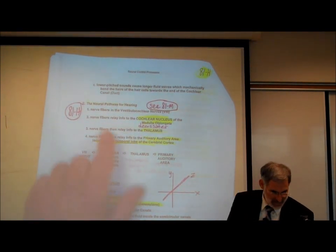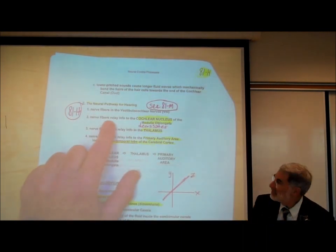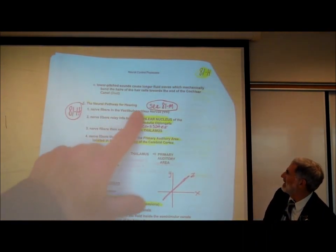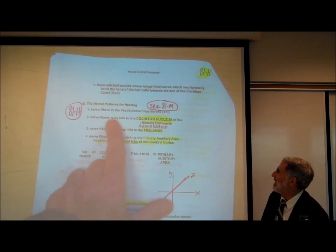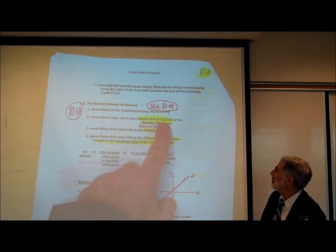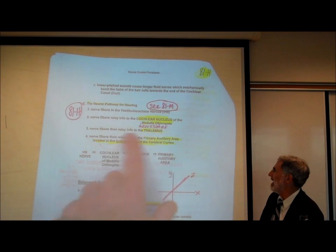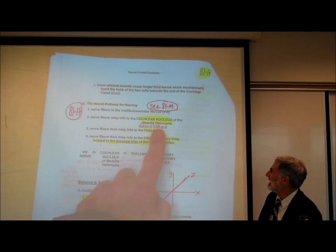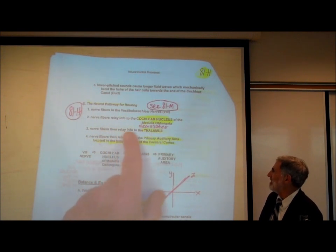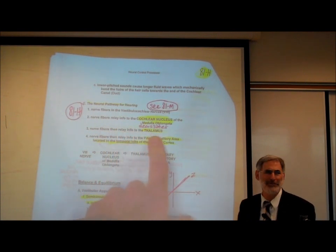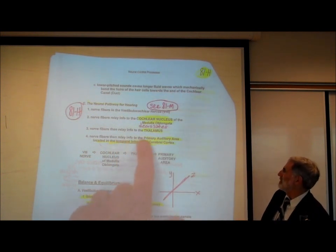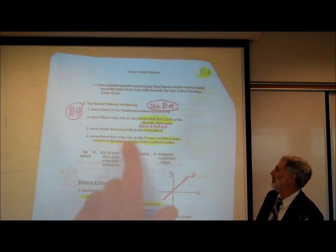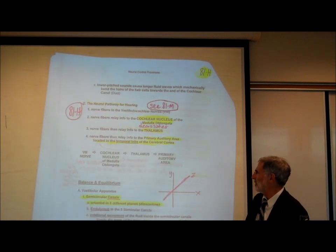The nerve fibers in the vestibulocochlear nerve, cranial nerve number eight, relay the information to the cochlear nucleus in the medulla oblongata. The nerve fibers then decussate and relay the information to the thalamus. Then the nerve fibers relay the information to the primary auditory area located in the temporal lobe of the cerebral cortex.